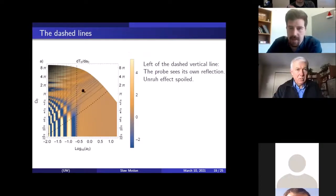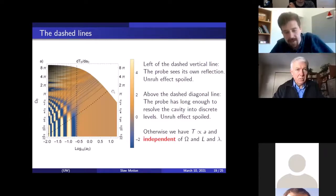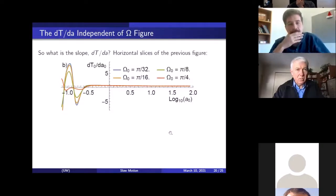Now something I should point out in connection to Rob's talk is that there are regions over here where dtda is negative. So we get down into this blue region over here. So in this region we have something like an anti-Unruh effect, which is interesting. Okay, so why did we lose this effect? We have it in this region. We have a dashed vertical line here. Left of this, the reason we lose the effect is that the probe sees its own reflection in a sense. Remember I showed the null trajectory bouncing back and forward. It sees some of those reflections and the Unruh effect is spoiled over there. And above the dashed line, the probe has long enough to realize, hey, I'm in a cavity. I shouldn't be acting like I'm in free space. And the Unruh effect is spoiled up there as well.